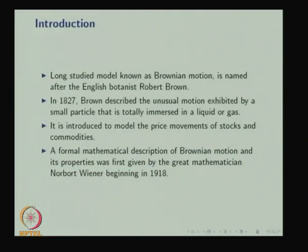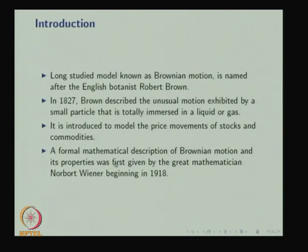The well-studied model known as Brownian motion is named after the English botanist Robert Brown, who in 1827 described the unusual motion exhibited by small particles totally immersed in a liquid or gas. It is introduced to model the price movements of stocks and commodities. A formal mathematical description was first given by the great mathematician Norbert Wiener beginning in 1920, and therefore Brownian motion is also called the Wiener process.